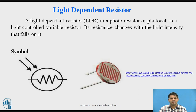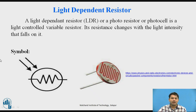LDR — light dependent resistors. So what is meant by the LDR? As the name itself suggests, it is a resistor which converts the light falling on it into an equivalent resistance. The resistance changes and is inversely proportional to the light intensity — so the more light falling on the LDR, the less will be the resistance.